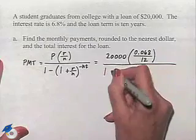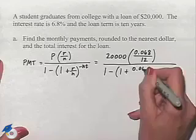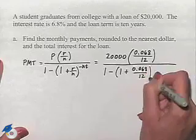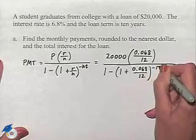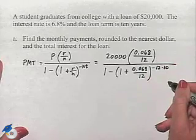And then in the denominator, we'll have 1 minus 1 plus 0.068 divided by 12 raised to the negative 12 times 10 as we're going to be having this loan for 10 years.